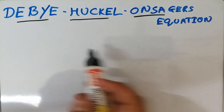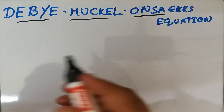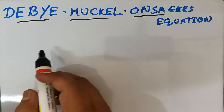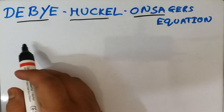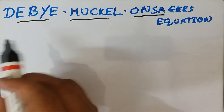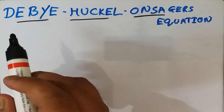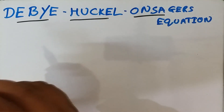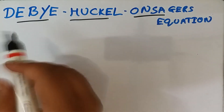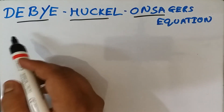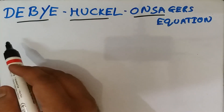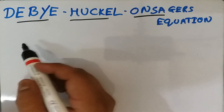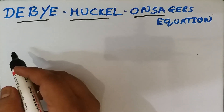Welcome. Today we are going to discuss the Debye-Hückel-Onsager equation. We have previously discussed Debye-Hückel theory, which was applicable to dilute solutions of strong electrolytes. However, we were failing to apply Debye-Hückel theory to solutions of strong electrolytes at considerable concentration. In order to overcome this difficulty, Debye, Hückel, and Onsager derived an expression applicable to concentrated solutions of strong electrolytes as well.